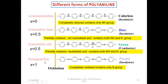You should get neither Leuco-Emeraldine nor Pernigraniline, because both of them are insulators — one is completely reduced benzenoid backbone, the other is completely oxidized quinoid backbone. For conducting polyaniline, we should have both backbones: benzenoid as well as quinoid. So if X equals 0.5, you will get Emeraldine base, which contains both the benzenoid and quinoid structures. Its color is blue. The base designation is because the oxidized quinoid nitrogen has a lone pair of electrons that can react with H+, making it a Lewis base. However, this form is also an insulator.